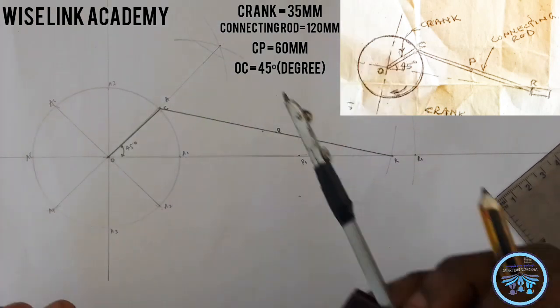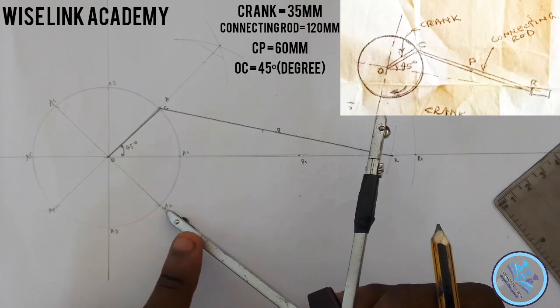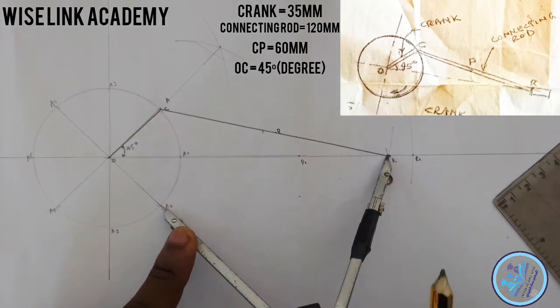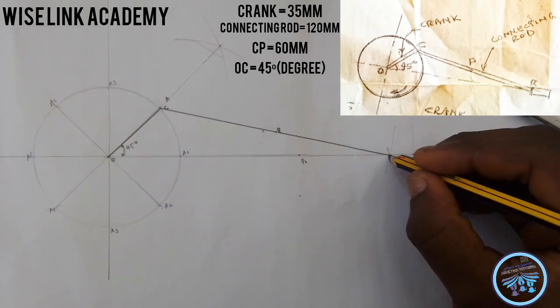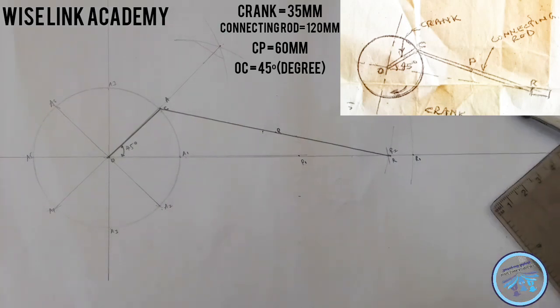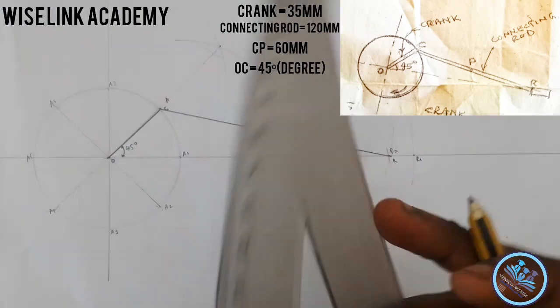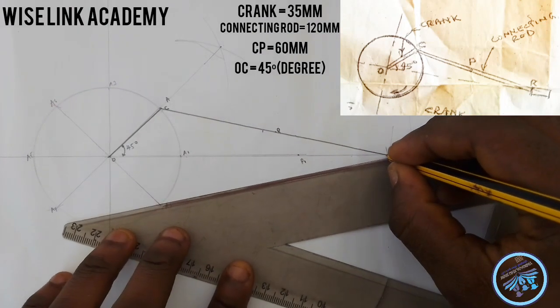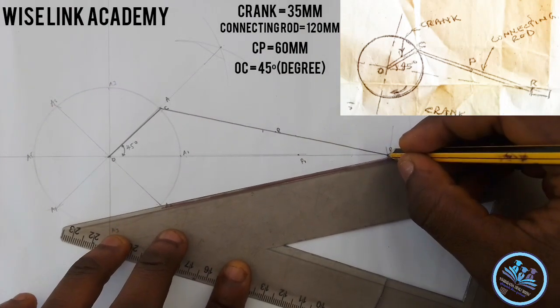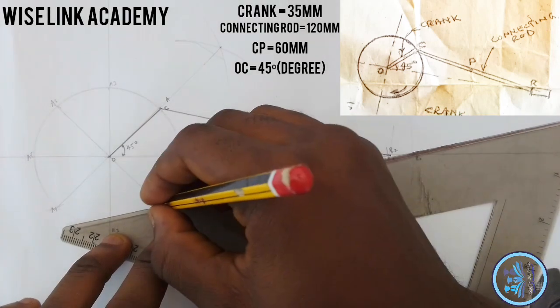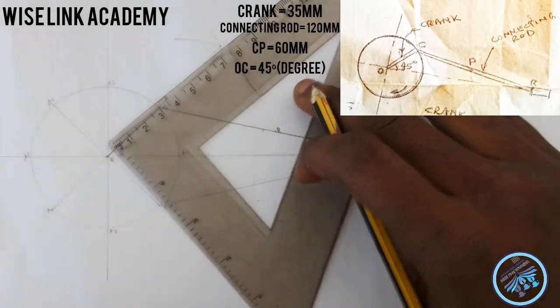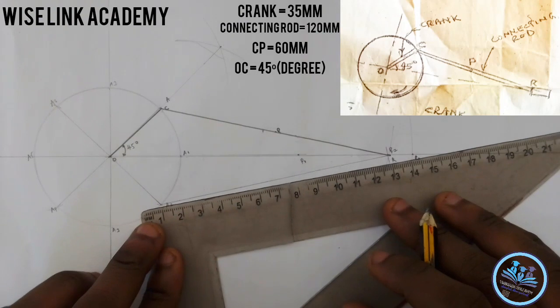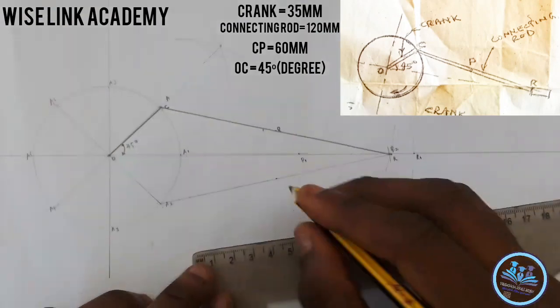Similarly with the same radius of 120 again at your A2, strike an arc somewhere here. The arc is touching this point, I call this my R2. Connect R2 to A2 to locate your point P2. I'll now measure my 60 to locate my point P2 here.